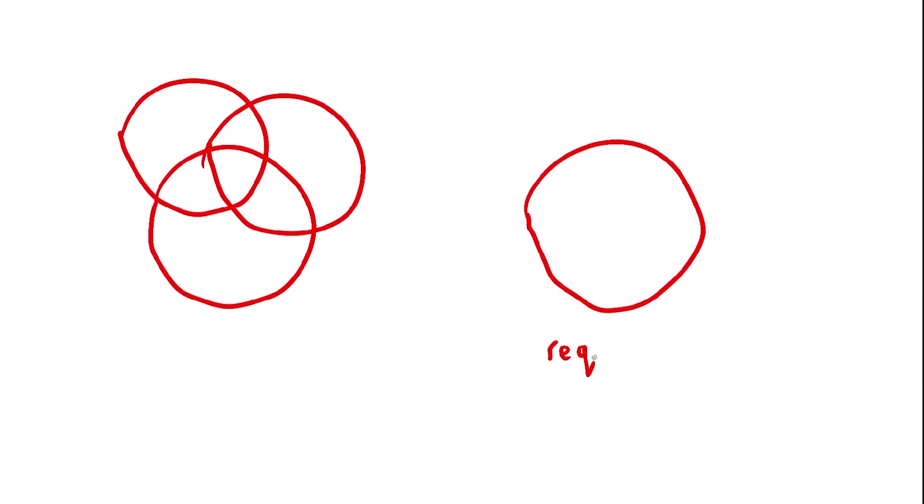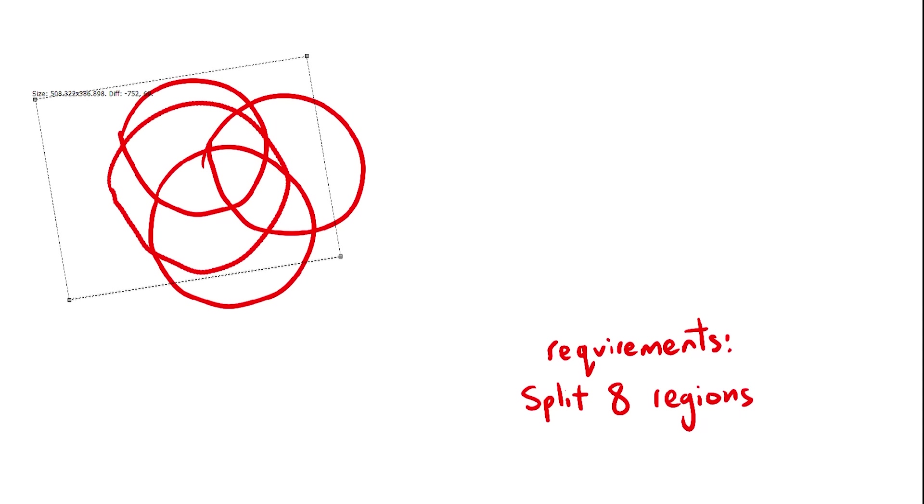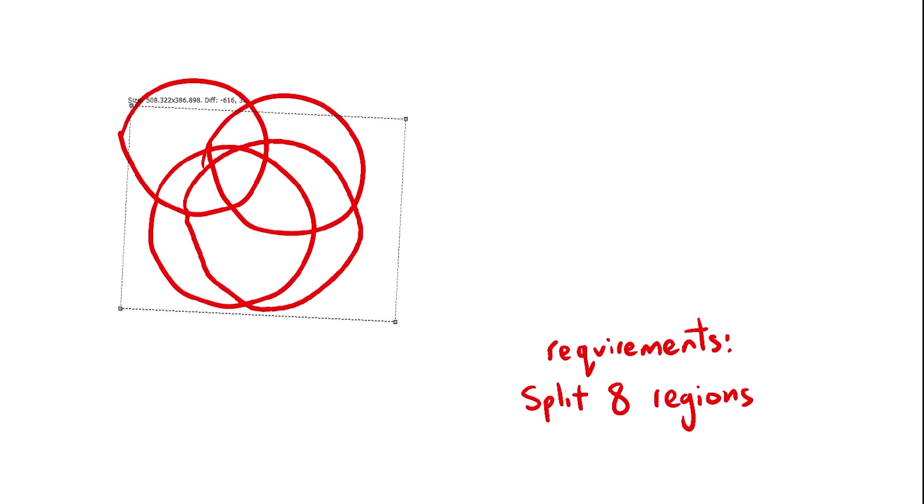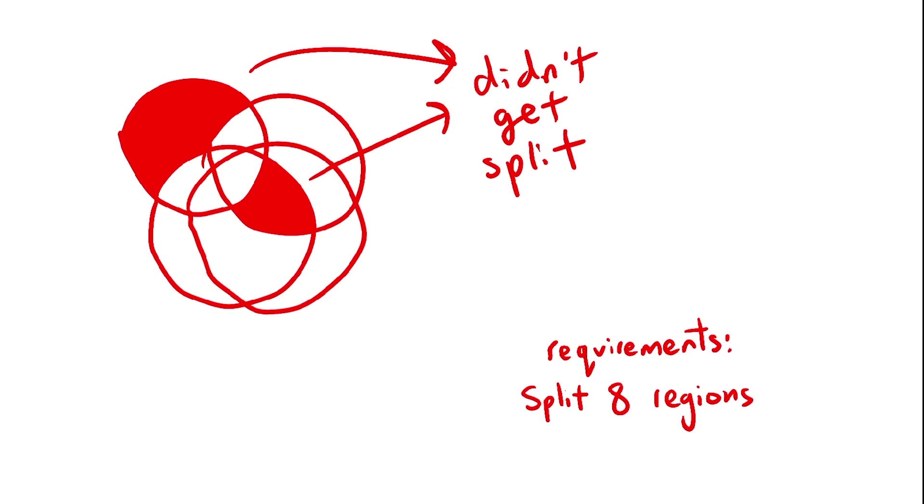So now we know that the 4th circle needs to split all 8 regions in half. It needs to go through all 8 regions. As we move this circle around, we can kind of tell that this isn't possible, there are just too many regions, but would like to prove this rigorously. So here we go.